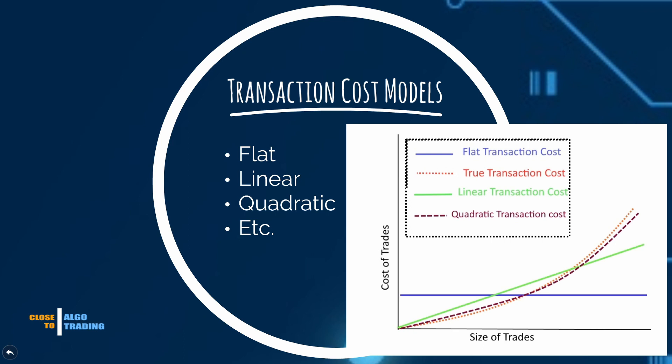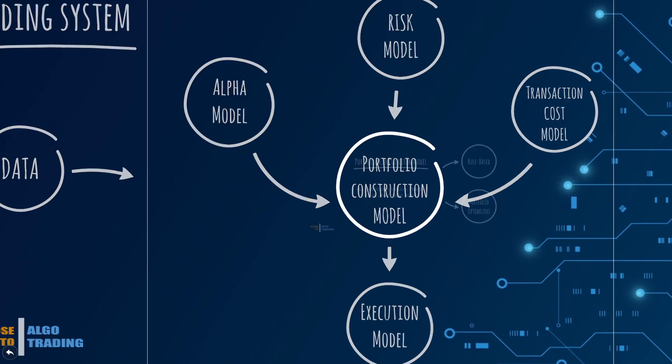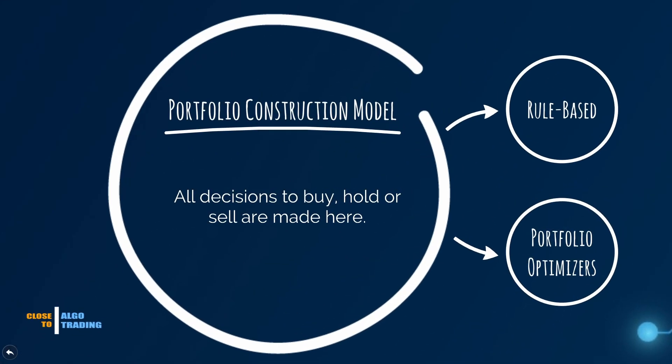Okay, now, when all the elements that provide information are known, we go to the portfolio construction model. As you can see, portfolio construction model has inputs from alpha, risk, and transaction cost models, and decides how to allocate your money between different assets, or tries to construct a portfolio based on some objective function. There are basically two types of portfolio construction models.